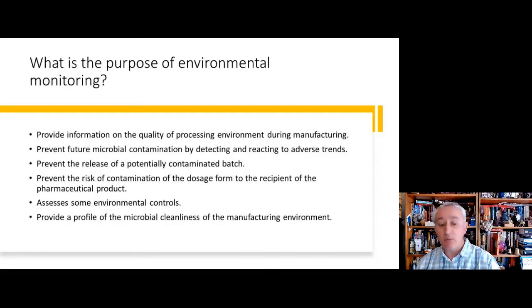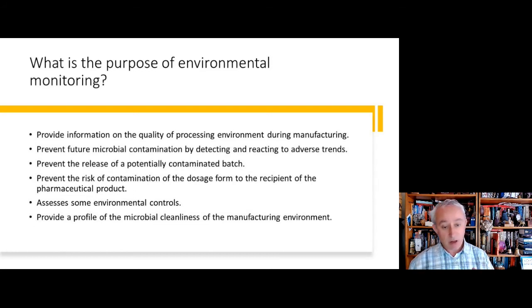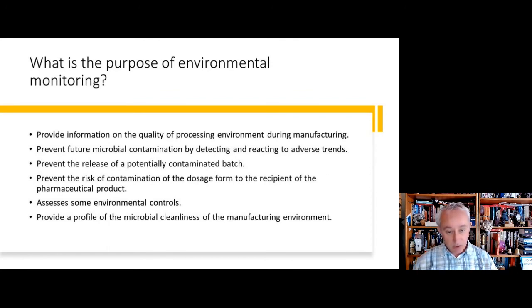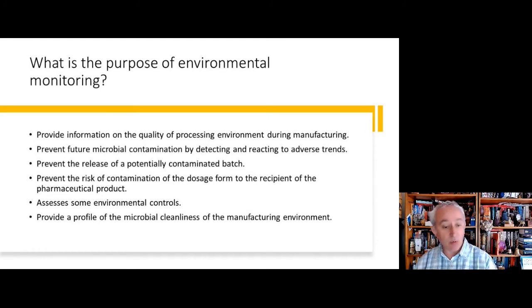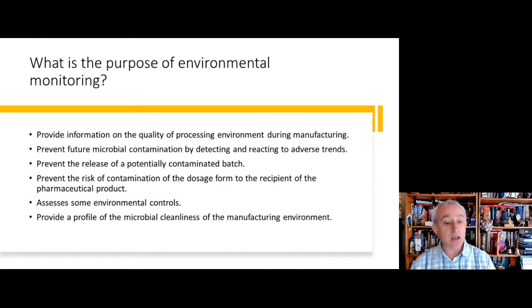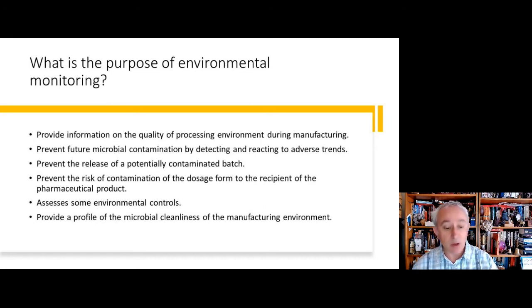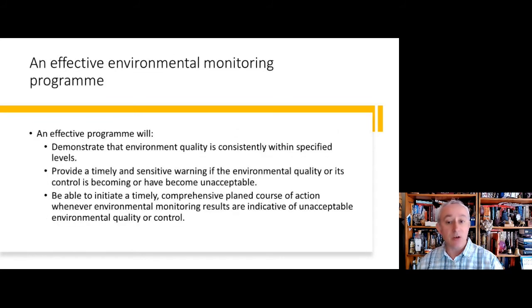The purpose of environmental monitoring is to provide information on the quality of the processing environment during manufacturing, and to enable data relating directly to a time and event to be pulled together, thus preventing the release of potentially contaminated batches of product. It's designed to prevent future microbial contamination by detecting and reacting to adverse trends as early as possible, drawing upon warnings and alerts. It also assesses the effectiveness of environmental controls and provides a profile of the microbial cleanliness of the manufacturing environment, such as connecting up the effectiveness of cleaning and disinfection procedures.